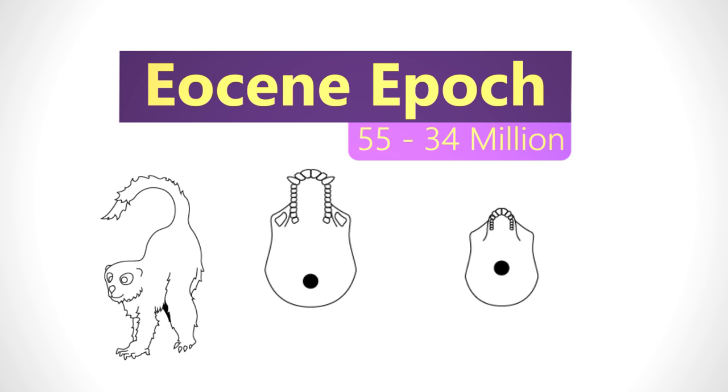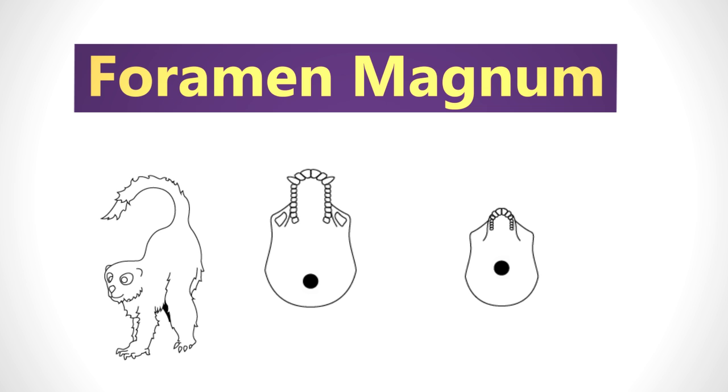The hole known as the foramen magnum, which allows the spinal cord to connect to the brain, began to shift from the back of the base of the skull towards the center. This implies that some of these early primates were shifting towards a more upright walking position.